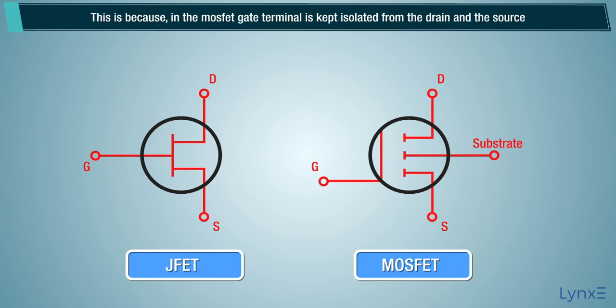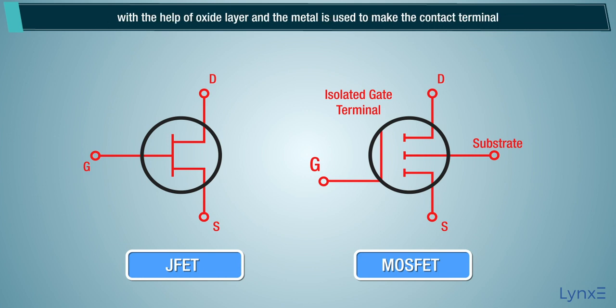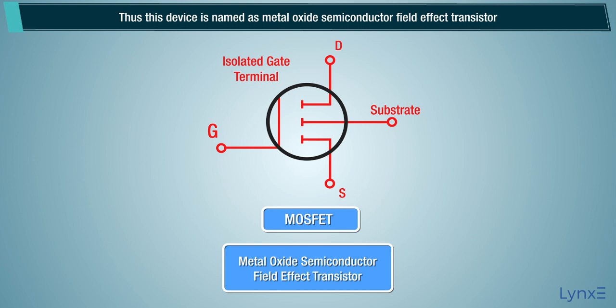This is because in the MOSFET, gate terminal is kept isolated from the drain and the source with the help of oxide layer, and the metal is used to make the contact terminal. Thus, this device is named as Metal Oxide Semiconductor Field Effect Transistor.